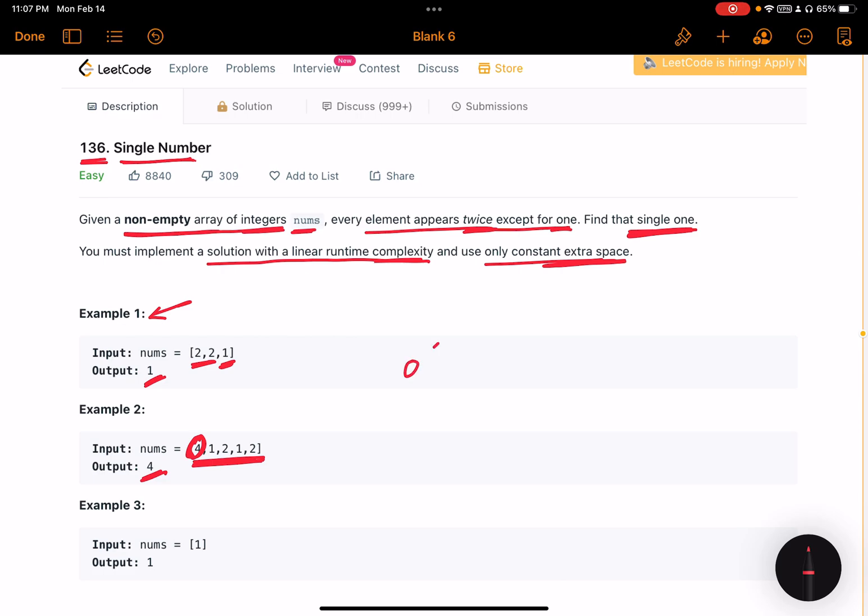Solving it with the space of O(n) is pretty easy. All you need to do is use a map or a dictionary with the original value as a key and check if the key exists. At the end, if a certain key has a count of only one, that value needs to be returned, but that will make this problem very easy.